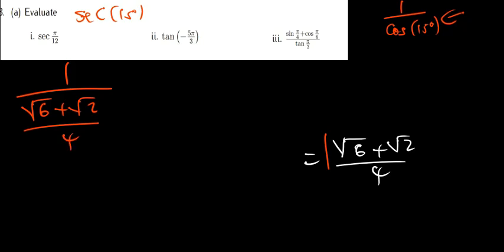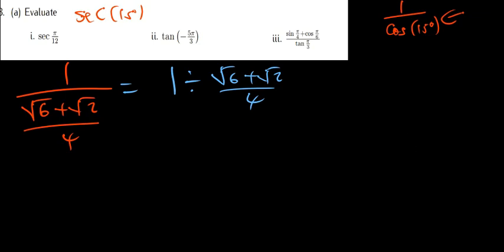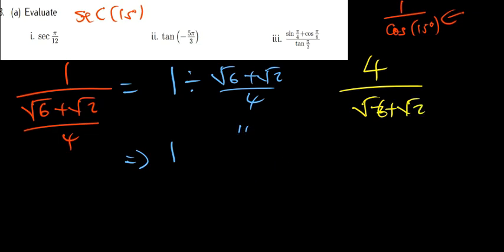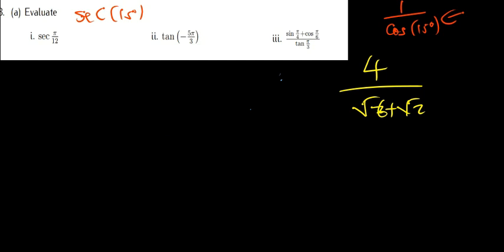The next step: 1 divided by (√6 + √2)/4 is the same as 1 times 4 divided by (√6 + √2), which equals 4/(√6 + √2). You can end there as your answer, but the best approach is to rationalize the denominator.